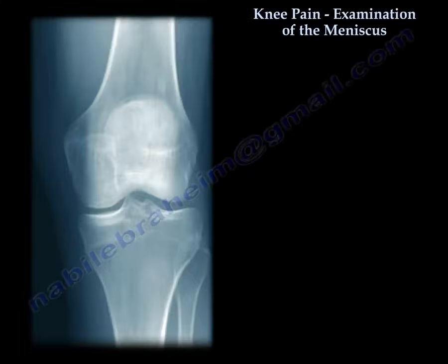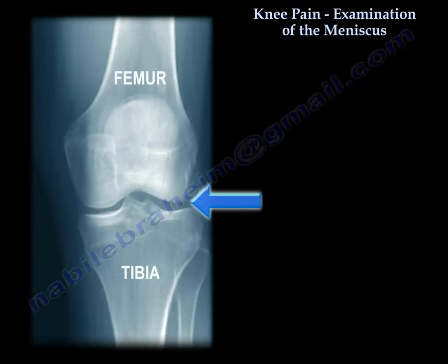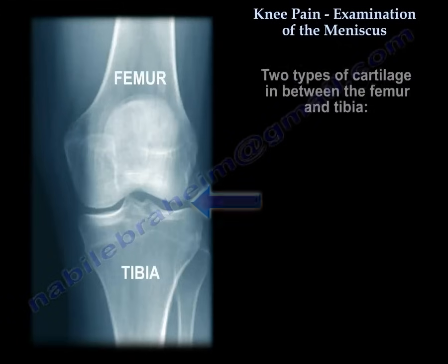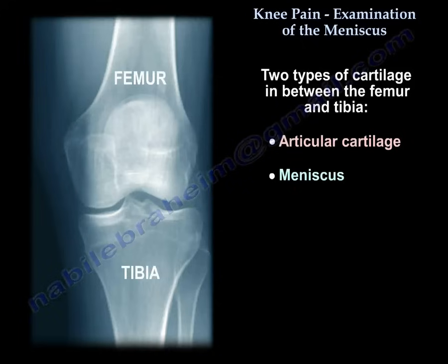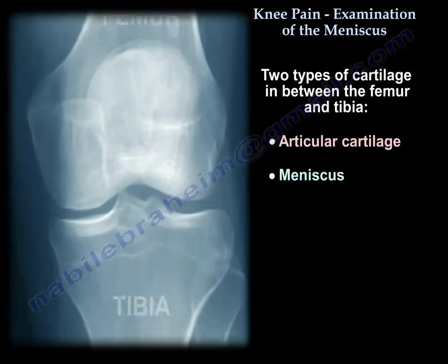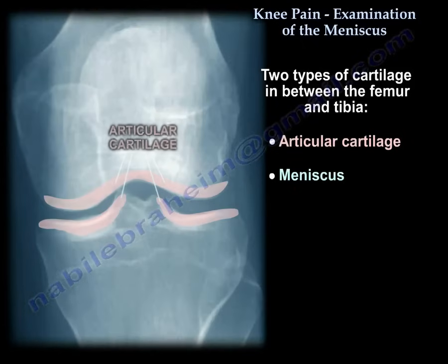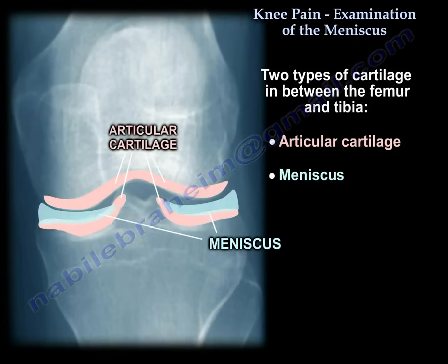This is an x-ray of the knee. In between the femur and tibia there is cartilage. There are two types of cartilage: there is articular cartilage and there is meniscus in between.